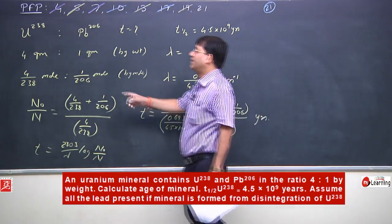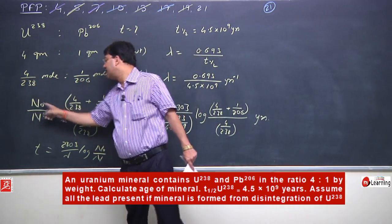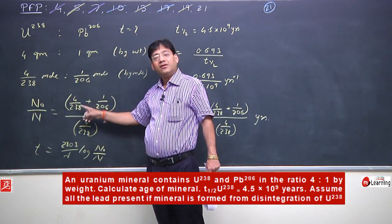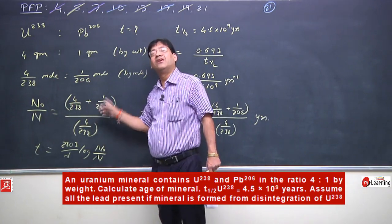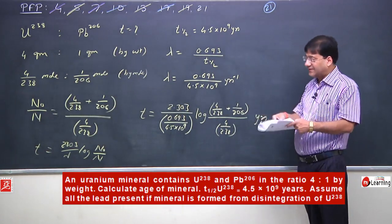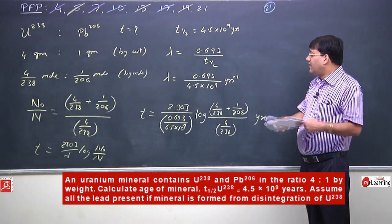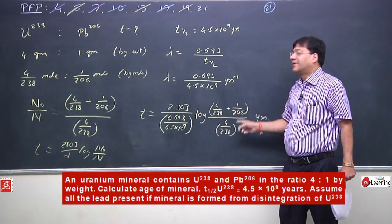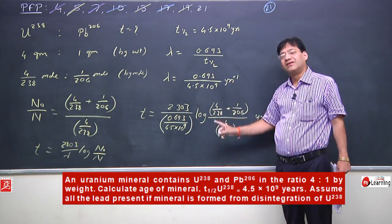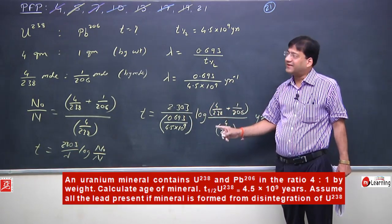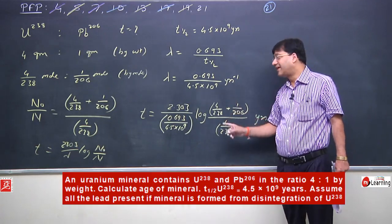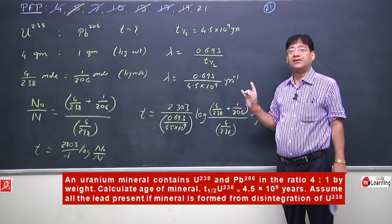The number of moles of uranium today, and the original number of moles of uranium, which equals today's uranium plus today's lead (since the lead also was originally uranium) — this same concept has been applied. To solve all these numerically, a calculator is needed. Solve with calculator, write the answer, check and verify it, and only then consider that you have solved it.